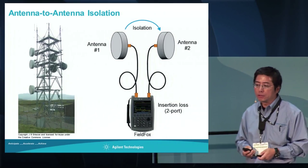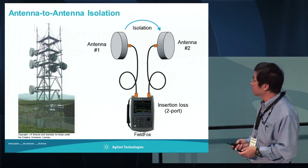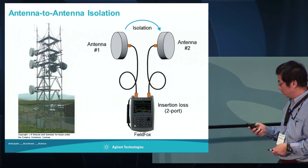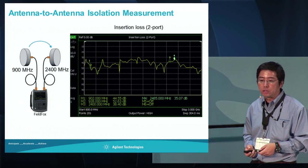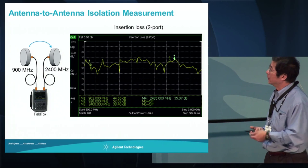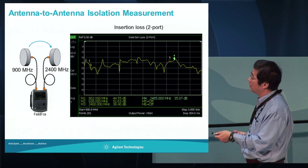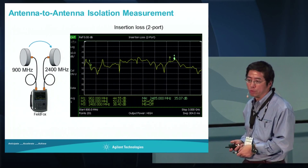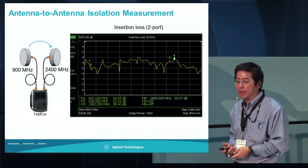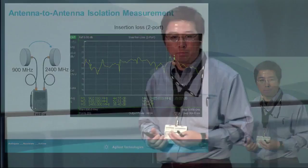We use insertion loss to make an antenna isolation measurement. Port one connects to antenna one, port two connects to antenna two, and you simply do an insertion loss measurement, whether you do a two-port calibration or just a response calibration. In this situation, we actually take a dual-band antenna - 900 MHz and 2.4 GHz, which is the Wi-Fi signal. Today, a lot of antennas are integrated, covering both cellular frequency as well as Wi-Fi, and that creates a great challenge, but we can easily make those measurements.